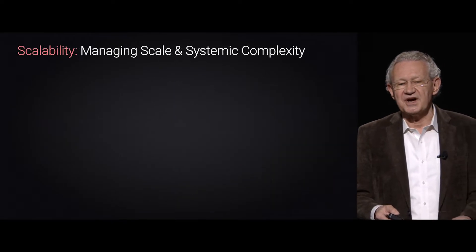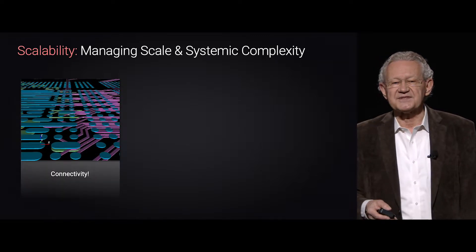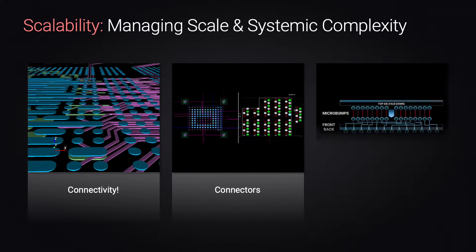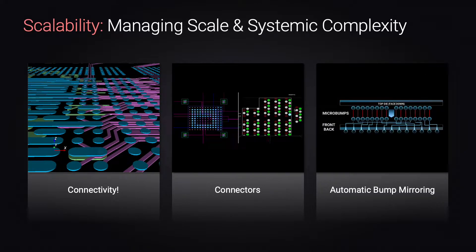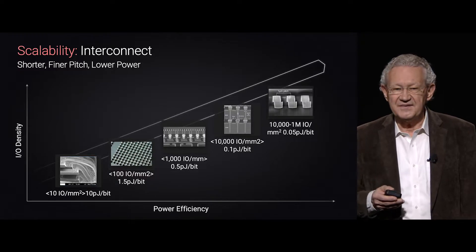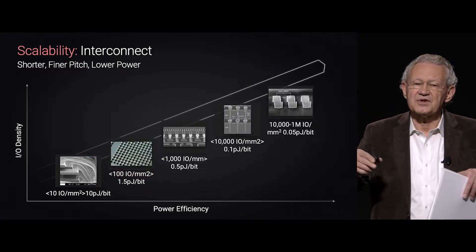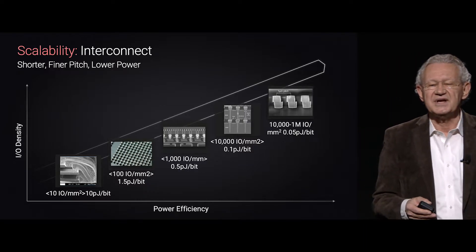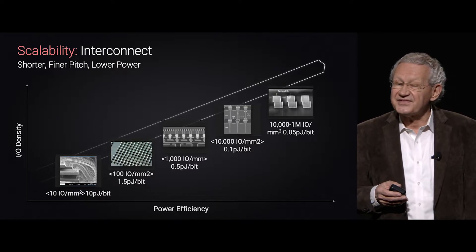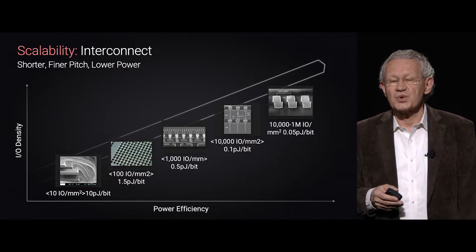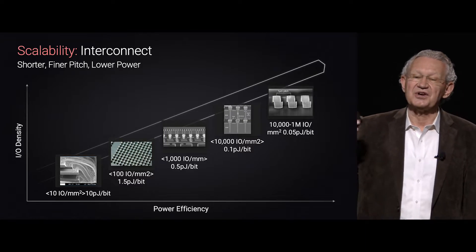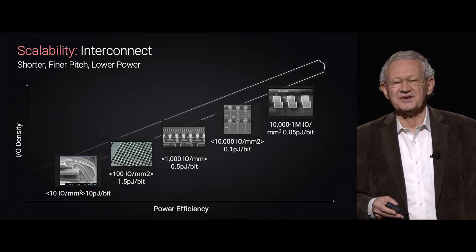Let's zoom in briefly into each one of those, starting with scale. From my perspective, scale is fundamentally connectivity and connectors more than anything else. If you look at the bottom right, the notion of creating new bumps — looking at this timeline, connectors have become way, way smaller. The density has gone from 10 to 10,000 or more bumps per square millimeter. That's enormous. Meanwhile, the power to actually transmit a signal has gone steadily down — excellent progress.